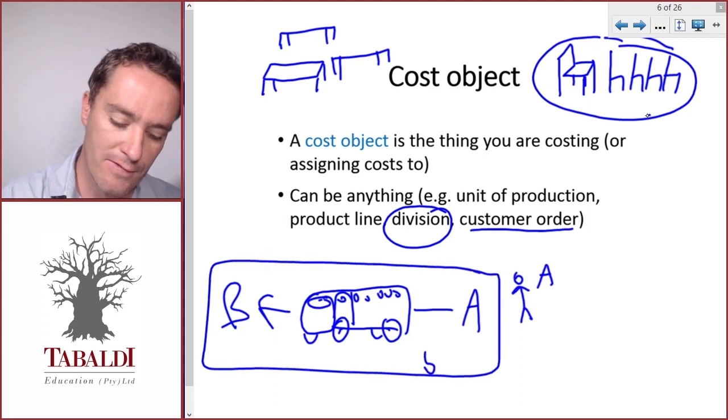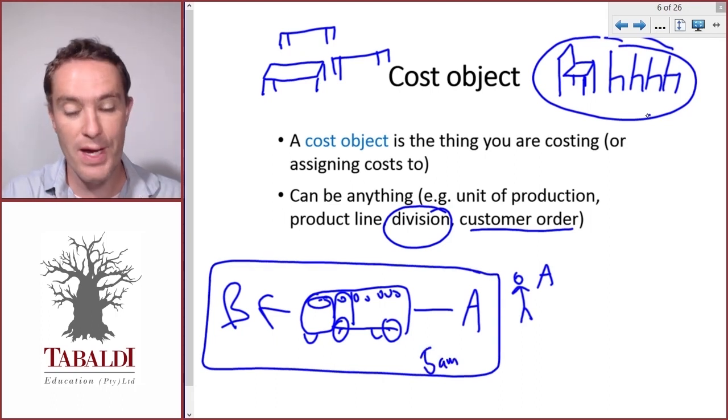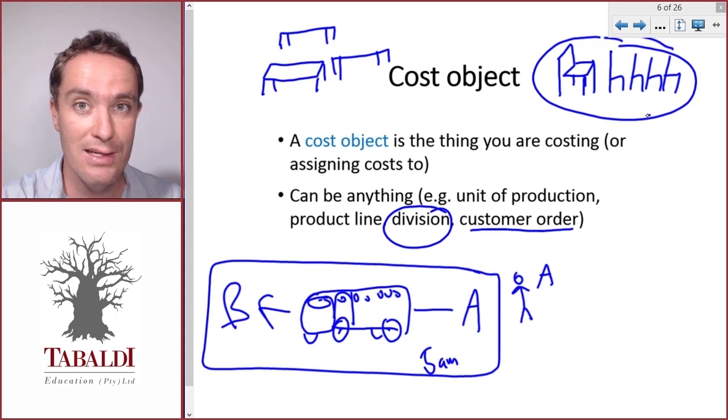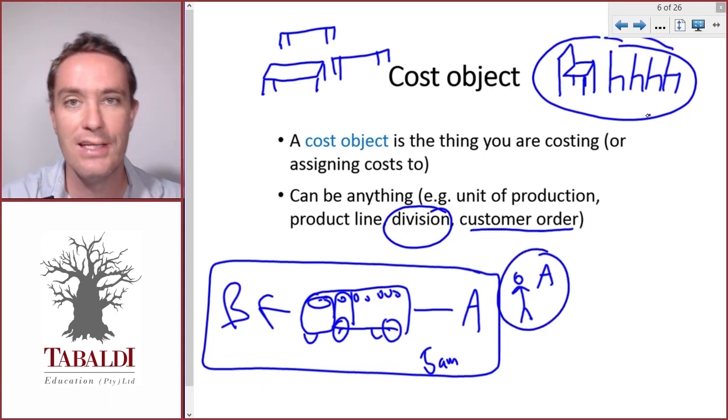Say the 5 AM bus ride from A to B—that could be a cost object. Obviously more costs would be taken into account to cost the bus ride from A to B than to just cost Passenger A that is on the bus.